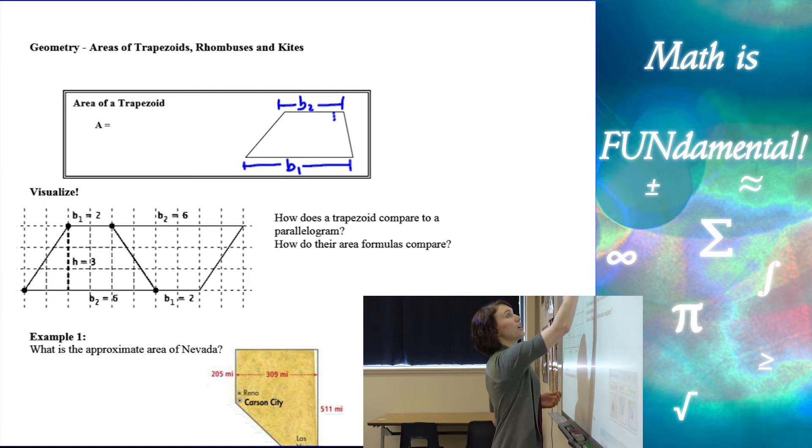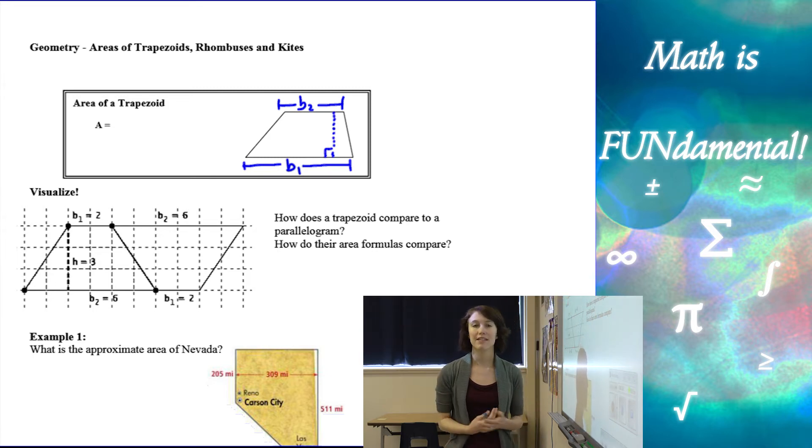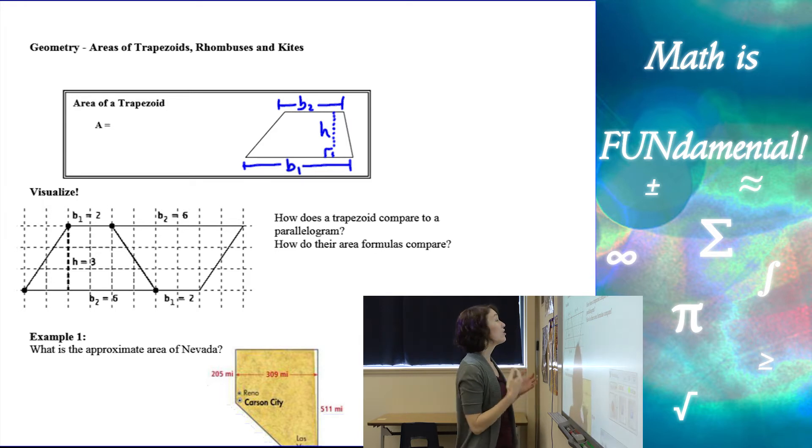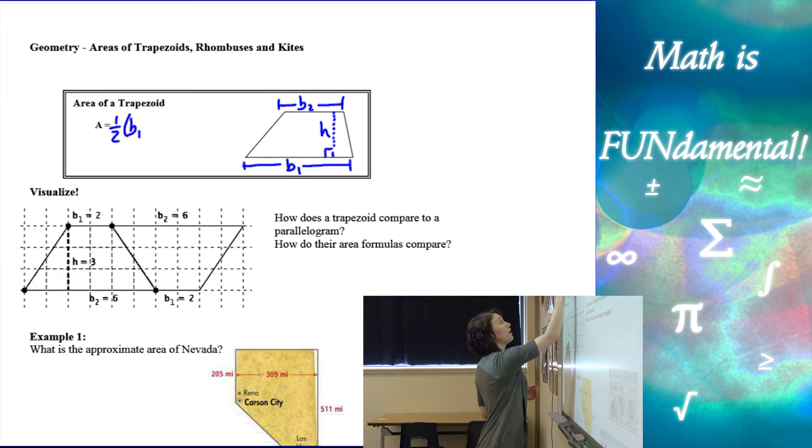And then remember, just like in our last video, every time we find an area and we use bases and heights, those heights have to be perpendicular to our bases. So here I have a height that's perpendicular to actually both bases because the bases are parallel. So my formula here is going to be one half base one plus base two times the height.